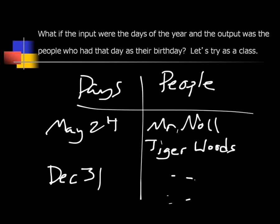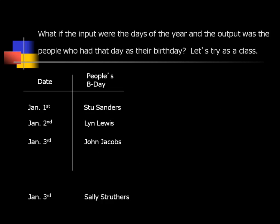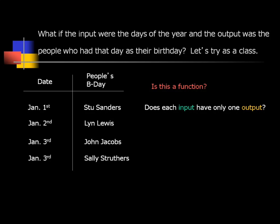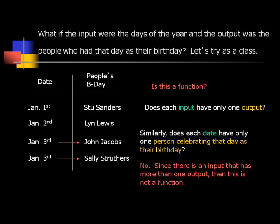Does that make sense? For example, December 31st — I have a brother whose birthday is December 31st, and I know a lot of people whose birthday is December 31st. So there are multiple people on December 31st. The input December 31st has multiple outputs — it's not a function.